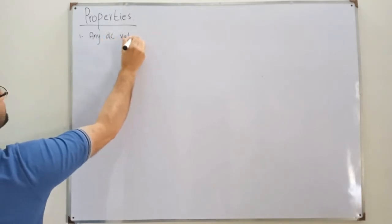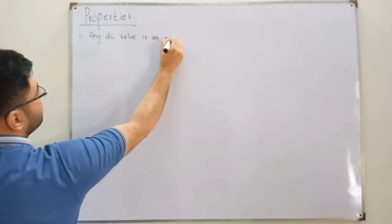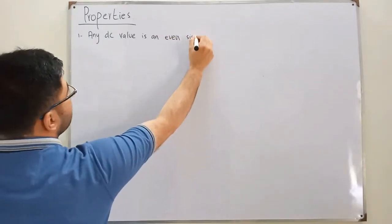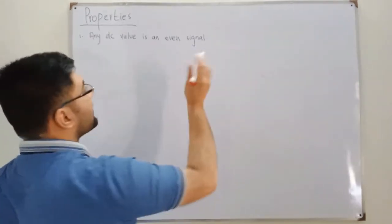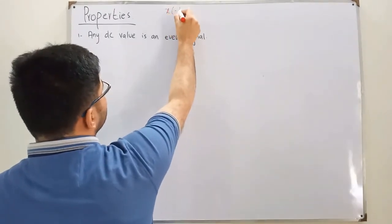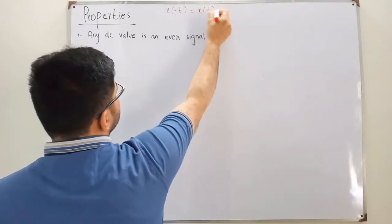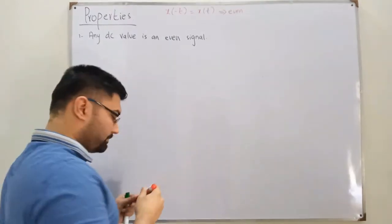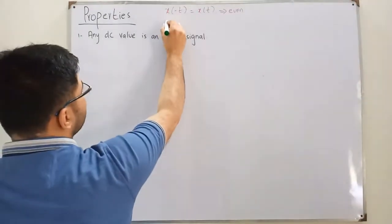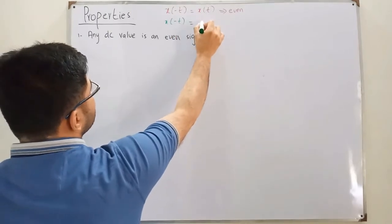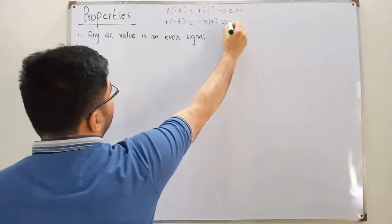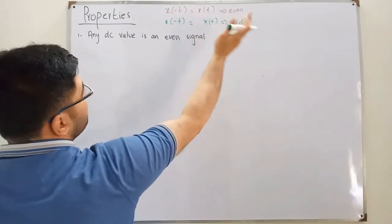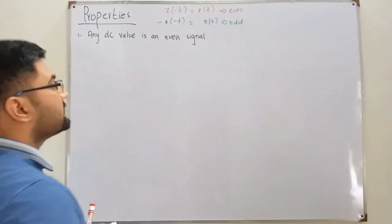A DC value is an even signal. Coming into this video, you should know what an even signal is and what an odd signal is. The basic criteria is based on time reversal: if you time-reverse the signal X(-t) and it equals the original signal X(t), then the signal is even. Similarly, if X(-t) equals -X(t), then this is the case of an odd signal — the negative can be on either side.